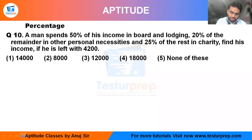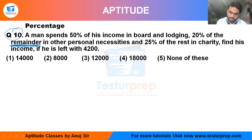This is question number 10. In this question, a man spent 50% of his income on board and lodging, 20% of the remainder on personal necessities, and 25% of the rest on charity. Find his income if he is left with a certain amount.